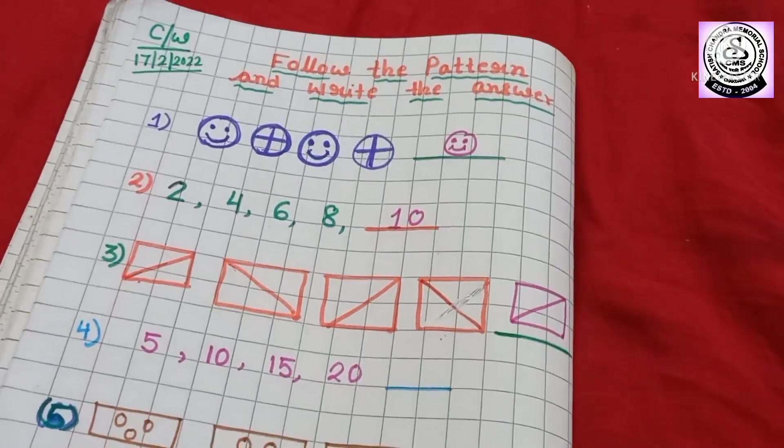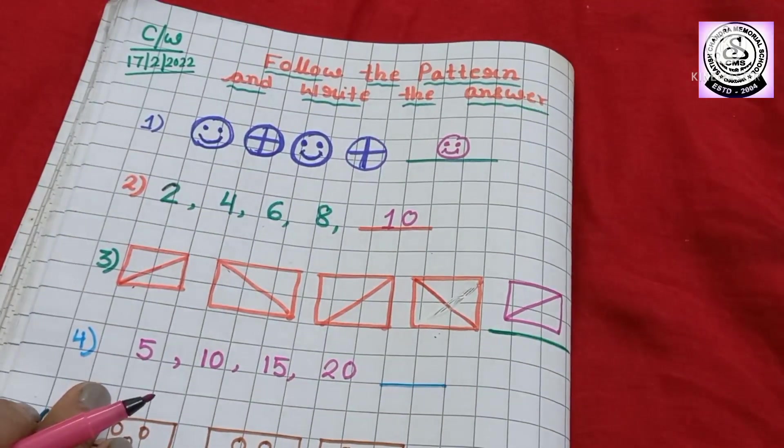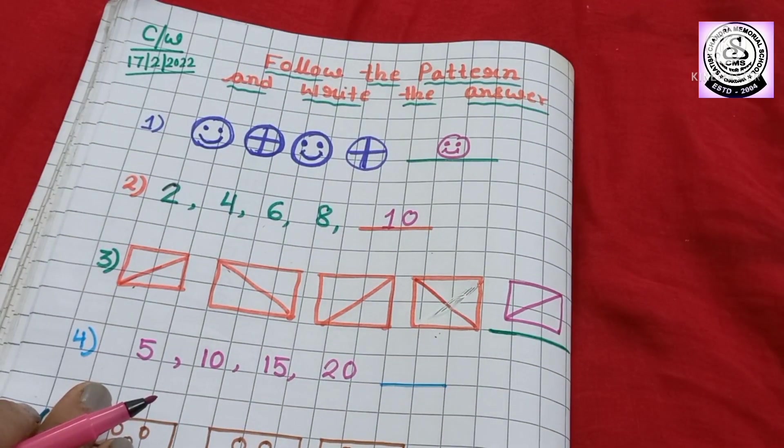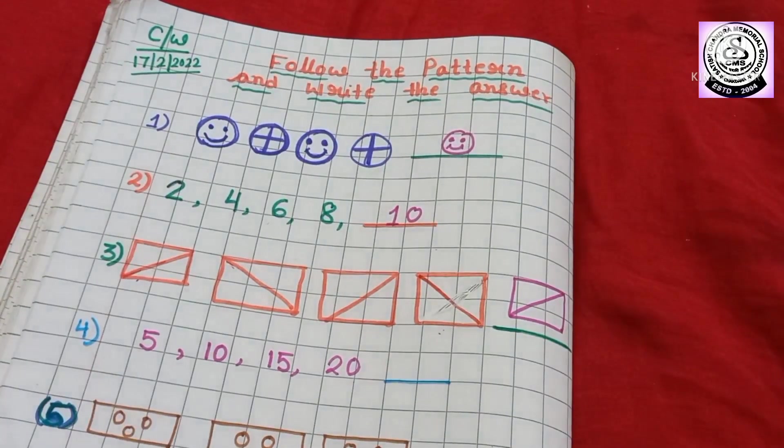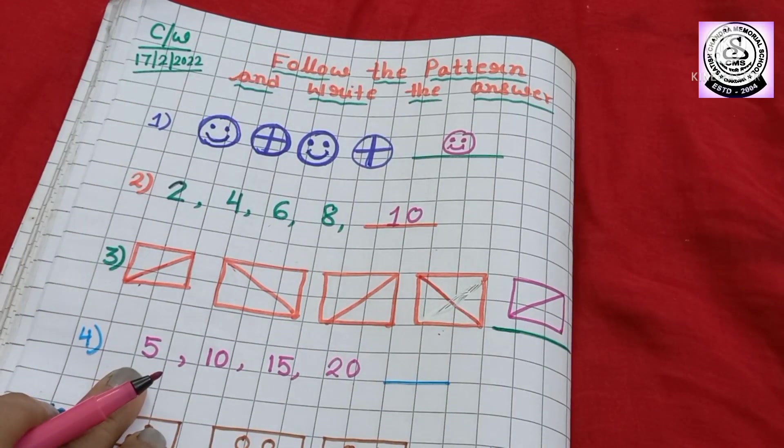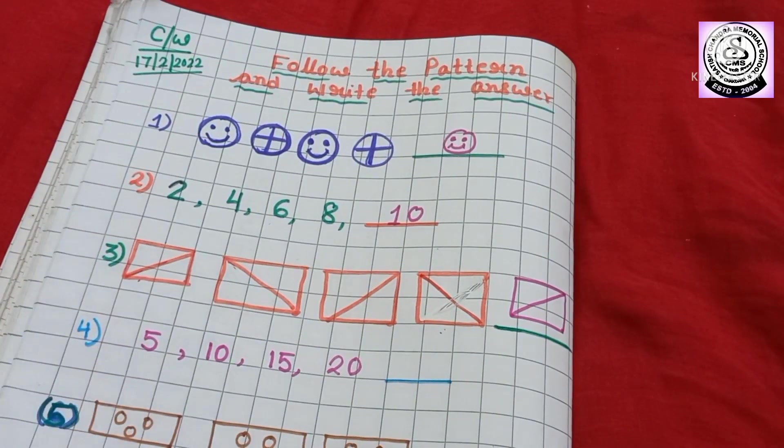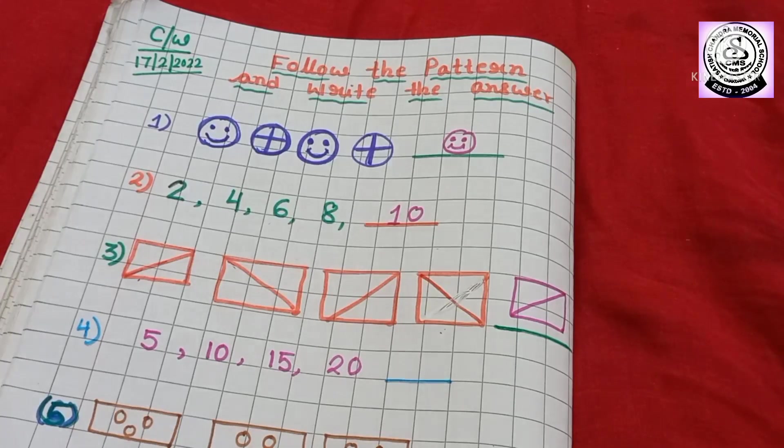Then, already you have learnt skip counting by 5. Count by 5. So, here you can see, I have written 5. After 5, what you have to do? Yes, you have to skip 4 numbers and jump to the 5th number.